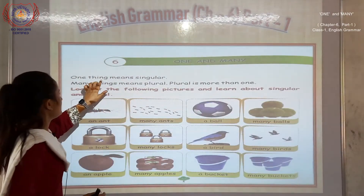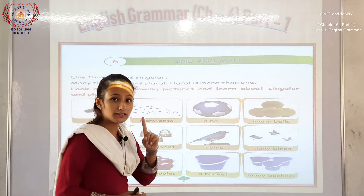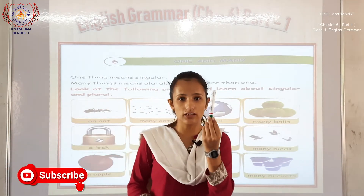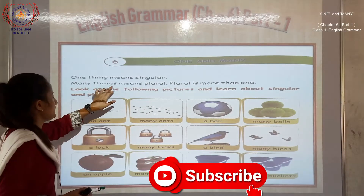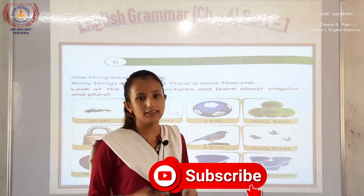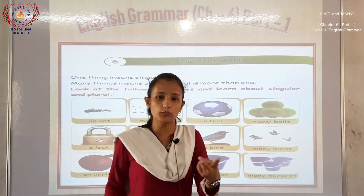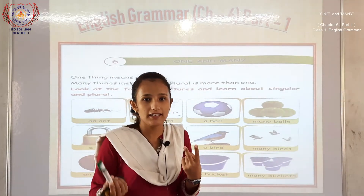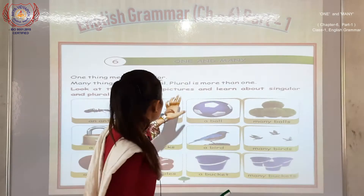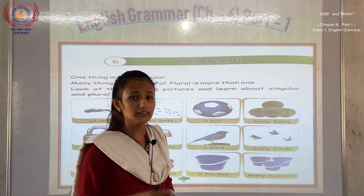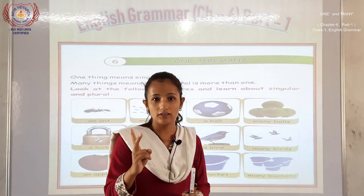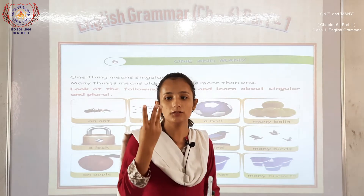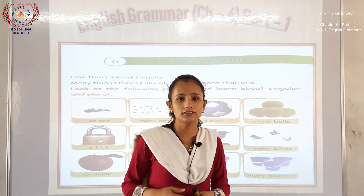One thing means singular. When you have two pens, what do you mean? Plural. One and many — plural. You have two pens, three pens, four, five, six — you have so many pens. What do you have to call? This is plural.